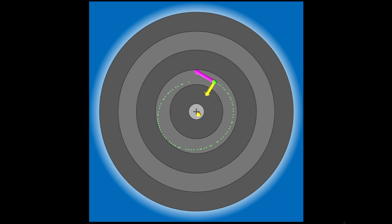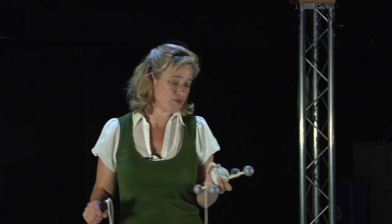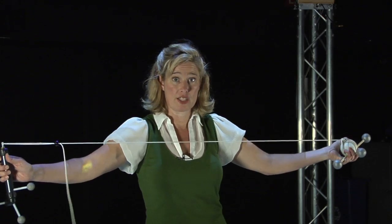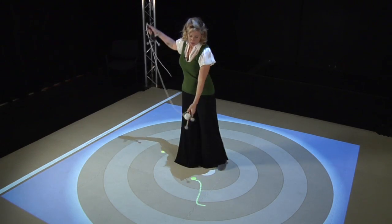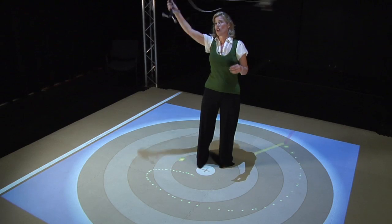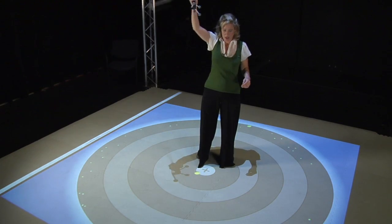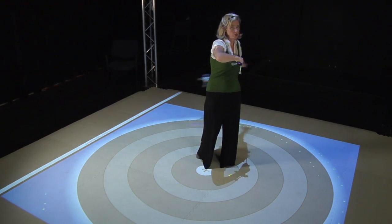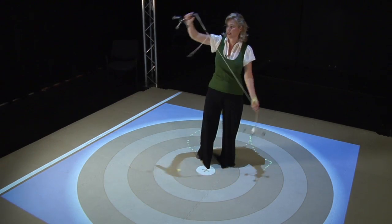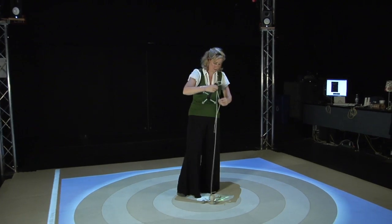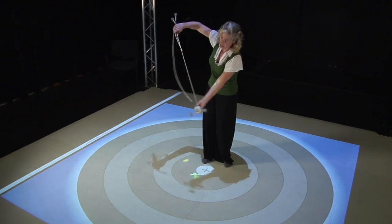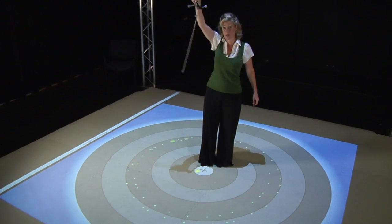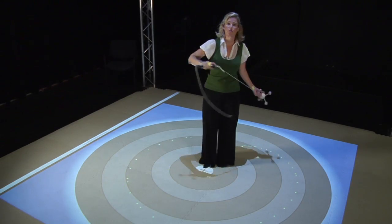The next variable to explore with students is radius, represented by the length of the string. Here we have a quite long string, so the radius is long. In the equation, radius is often the denominator in the centripetal force formula. So if I make this string shorter, is it going to be harder or easier to swing? Pushing the string down to shorten it — it's actually harder to get it swinging. Because the radius has decreased, the centripetal force has increased.